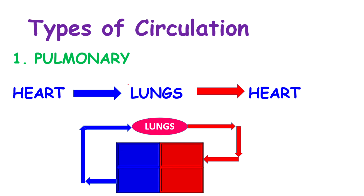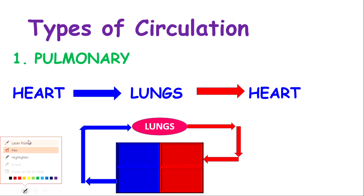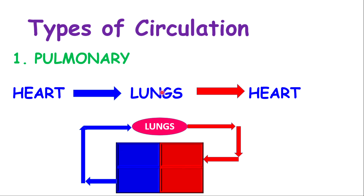Now we'll finish with the types of circulation. There are three main types of circulation in the body. The first is pulmonary circulation — pulmonary is associated with the lungs — where blood flows from the heart to the lungs and back to the heart. Deoxygenated blood flows from the right side of the heart into the lungs, and oxygenated blood flows from the lungs back into the heart. The atrium receives blood and the ventricle pushes it out.